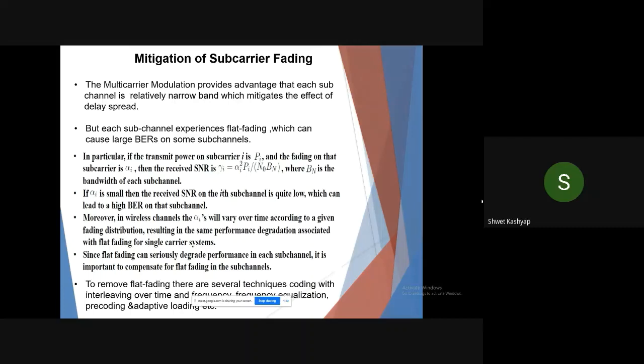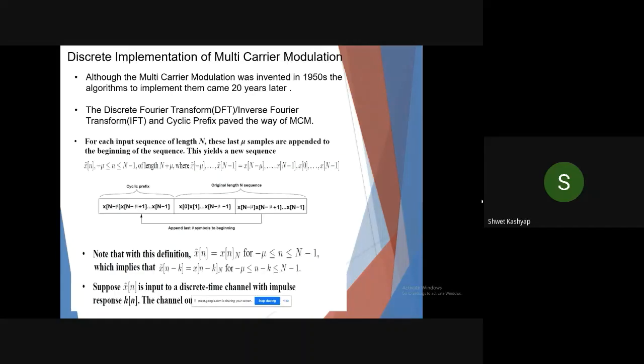Now discrete implementation of MCM. Although MCM was invented in the 1950s, the algorithm to implement it came 20 years later after discrete Fourier transform, IFFT, and cyclic prefix came into the picture. You can see that for each input sequence of length N, these last mu samples are appended to the beginning of the sequence, yielding the cyclic prefix.